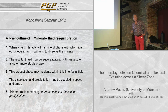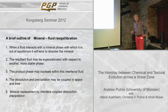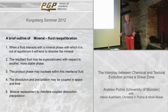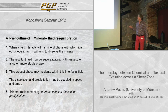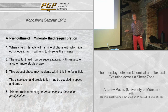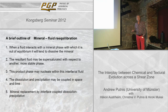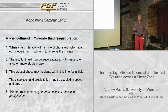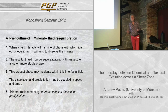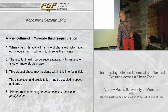What we find very often in experiments, and what we see evidence for in nature, is that this dissolution and precipitation may be coupled in space and time. In other words, you can replace one mineral by another by what we call interface-coupled dissolution-precipitation. This has a lot of curious characteristics: you pseudomorph one phase by another, you keep the external form — because the external form is defined by the fact that nucleation may be on the original surface — and you transfer crystallographic information, because nucleation on a surface will have some epitaxy, some crystallographic relations.